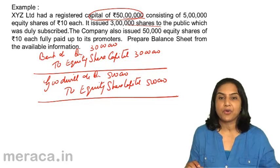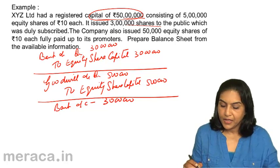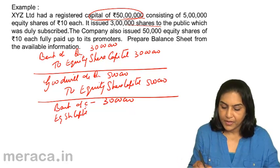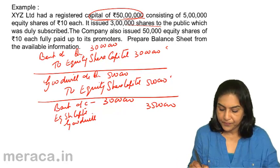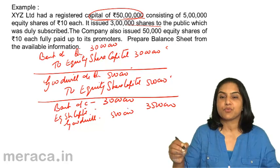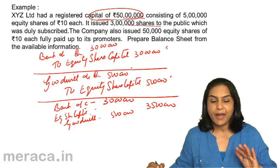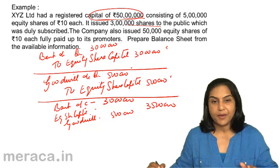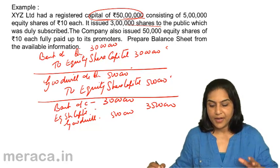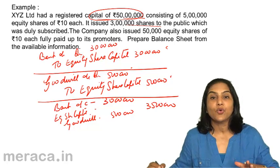As a result, what do we have in the balance sheet? We would have a bank balance of 30 lakhs, share capital of 30 lakhs plus 5 lakhs — therefore 35 lakhs — and a goodwill amount of 5 lakhs. Bank account debit to equity share capital for the issue of shares to the public for cash: 30 lakhs. For issuing shares to promoters for services rendered, the entry is goodwill account debit to equity share capital, 5 lakhs. Net result: bank balance of 30 lakhs, goodwill of 5 lakhs, and equity share capital of 35 lakhs, assuming these are the only transactions as of date.